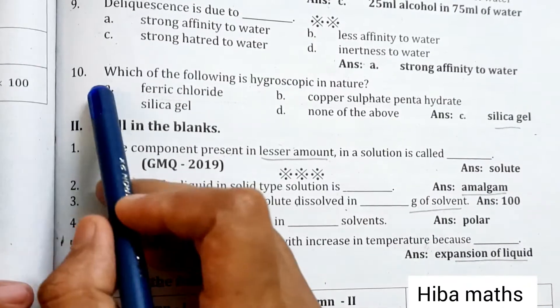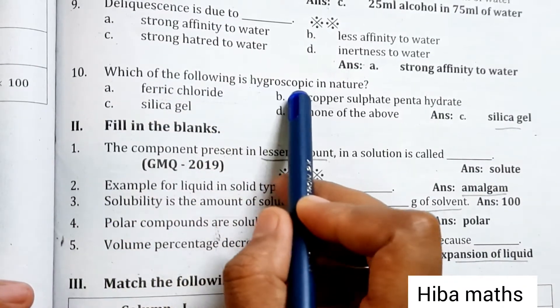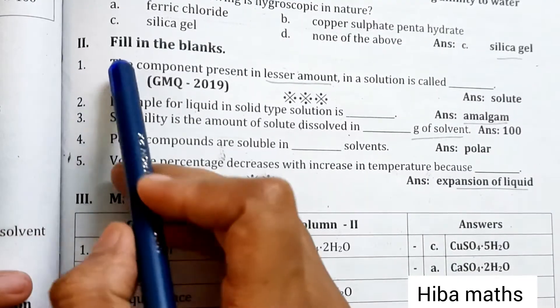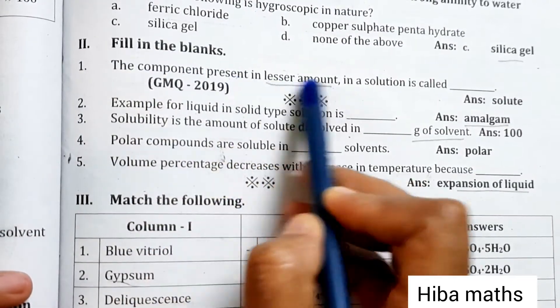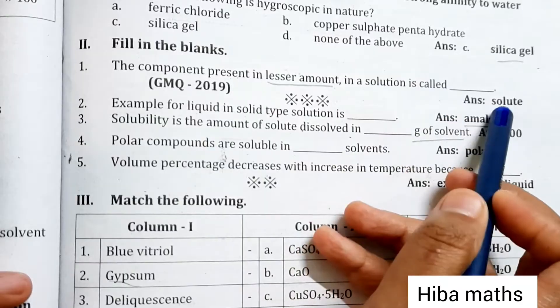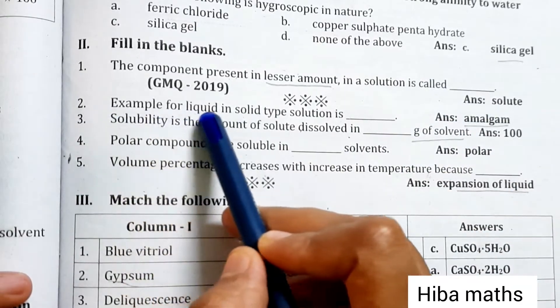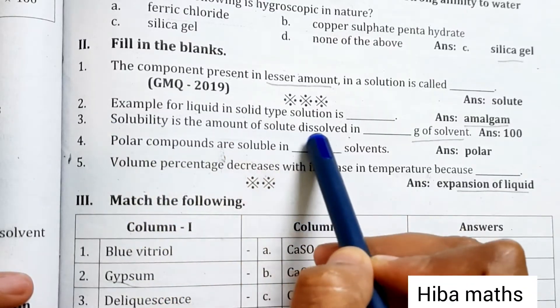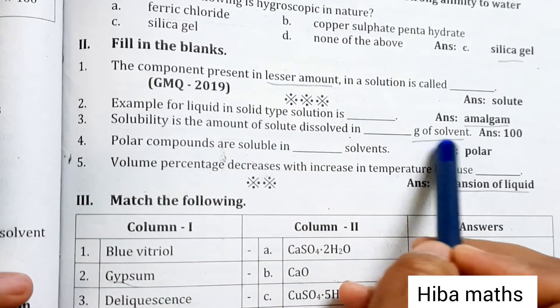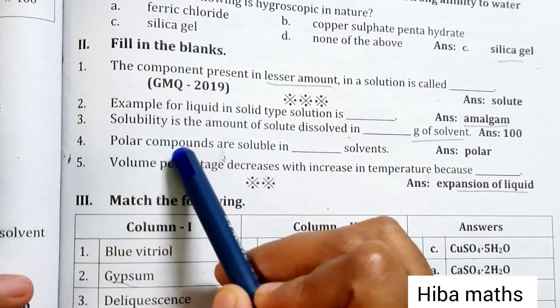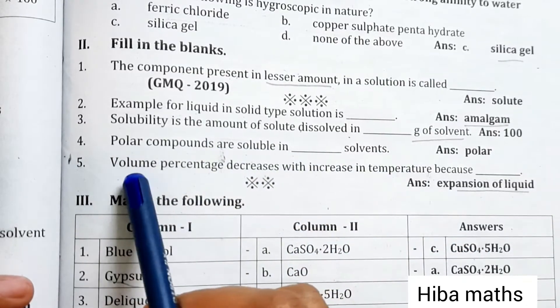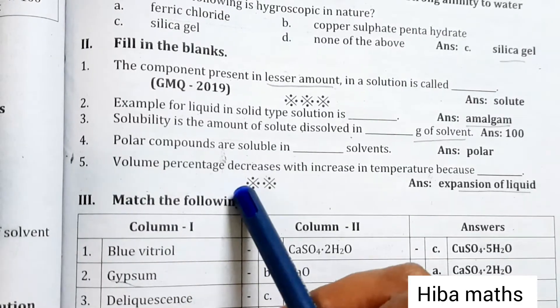Which of the following is hygroscopic in nature? Silica gel. Fill in the blanks: the component present in lesser amount in a solution is called solute. Example for liquid in solid type is amalgam. Solubility is the amount of solute dissolved in 100 grams of solvent. Polar compounds are soluble in polar solvents. Volume percentage decreases with increase in temperature because expansion of liquid.